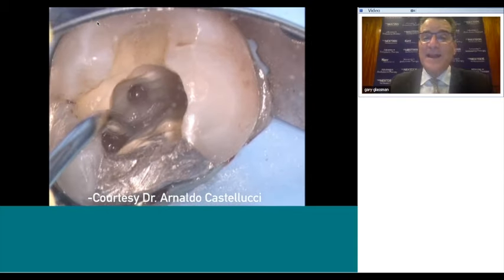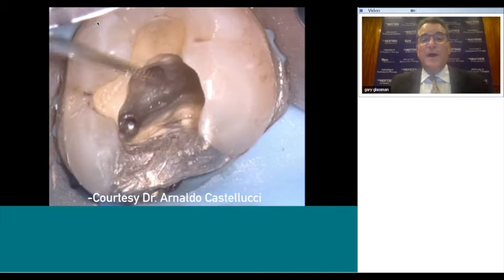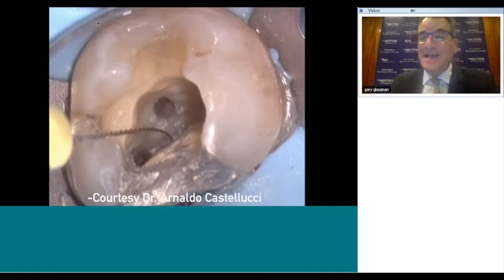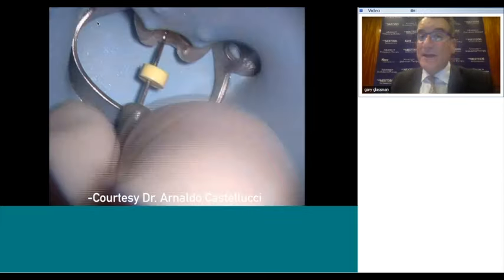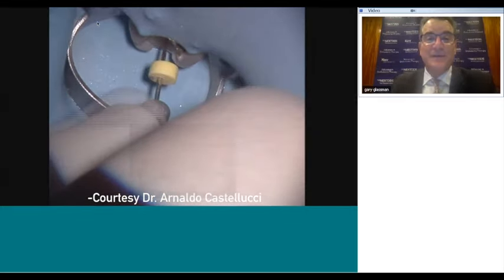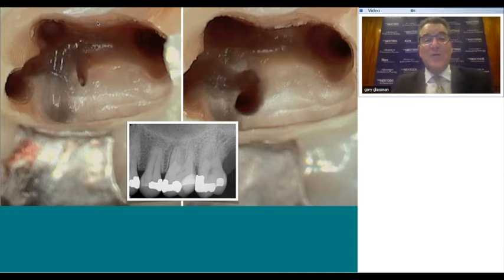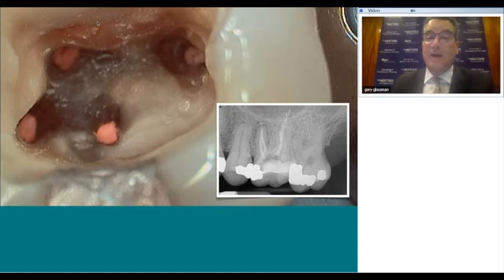The MB2 canal will tract under the pulp chamber floor both palatally and mesially. As you shape it, the orifice will move more toward the mesial buccal root—that's your MB2. The tooth I most often retreat is the maxillary first molar where the MB2 hadn't been found. The AAE has boldly stated that almost 100% of maxillary first molars contain the MB2 canal. We must exhaust all efforts to find all canals to eliminate or prevent apical periodontitis.